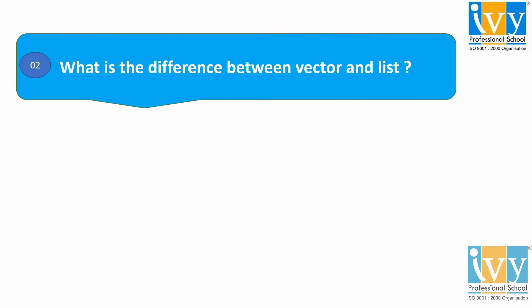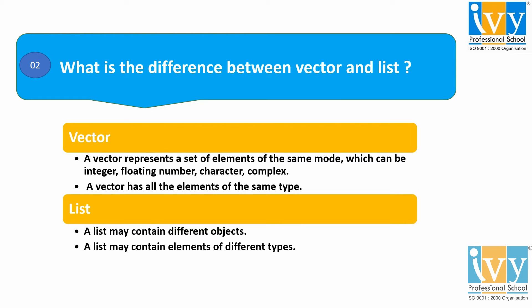Moving to our second question: what is the difference between a vector and a list? A vector represents a set of elements of the same mode, which can be integer, floating number, character, or complex — a vector has all elements of the same type. Whereas a list is basically a generic vector that contains different objects and can contain elements of different types.